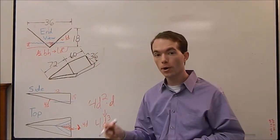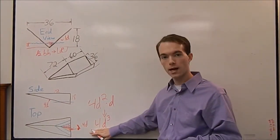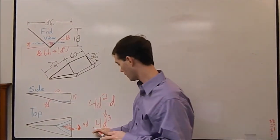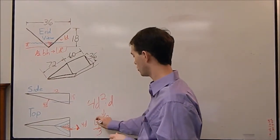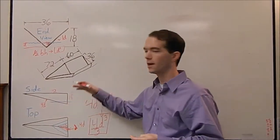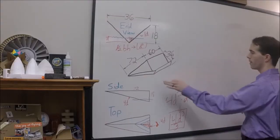Tack on a d, this becomes 4d cubed. Now the volume of our pyramid is one third area of the base times the height. Well this is the area of the base times the height. We have to divide that by three. So it becomes 4 thirds d cubed, is the volume of the pyramid that is beneath the water. So that is our displaced amount in the bow section.